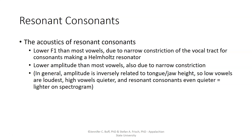There's also lower amplitude than most vowels, again due to the narrow constriction, which dampens the amount of noise that resonates out of the mouth. In general, amplitude is inversely related to tongue and jaw height in speech production, so low vowels tend to be louder than high vowels, for example. Resonant consonants are even quieter, meaning they will show up lighter on the spectrogram, and their formant frequencies may not be as dark or as obviously visible.